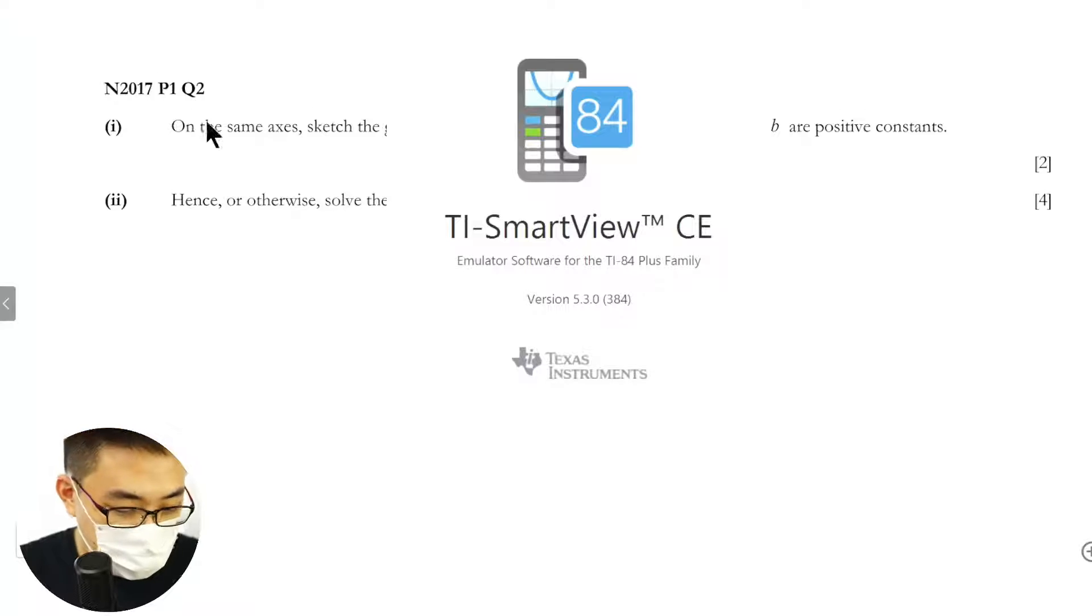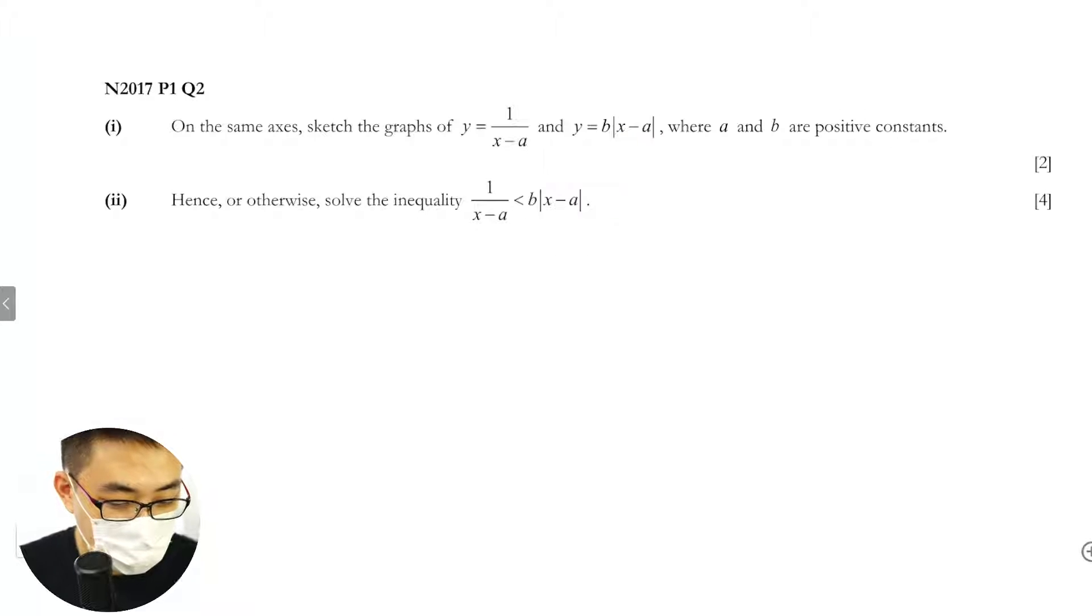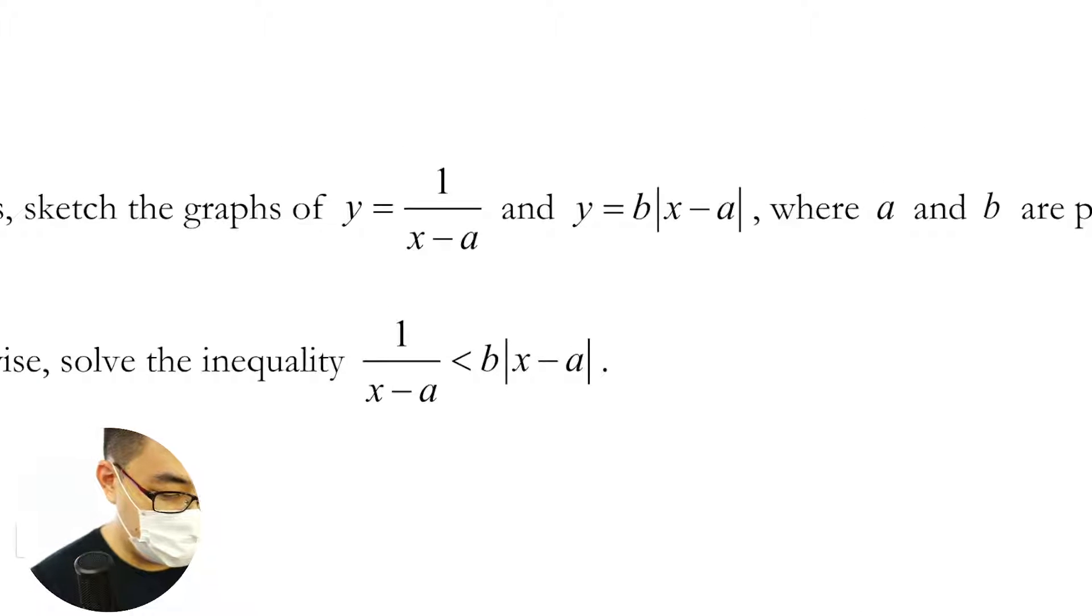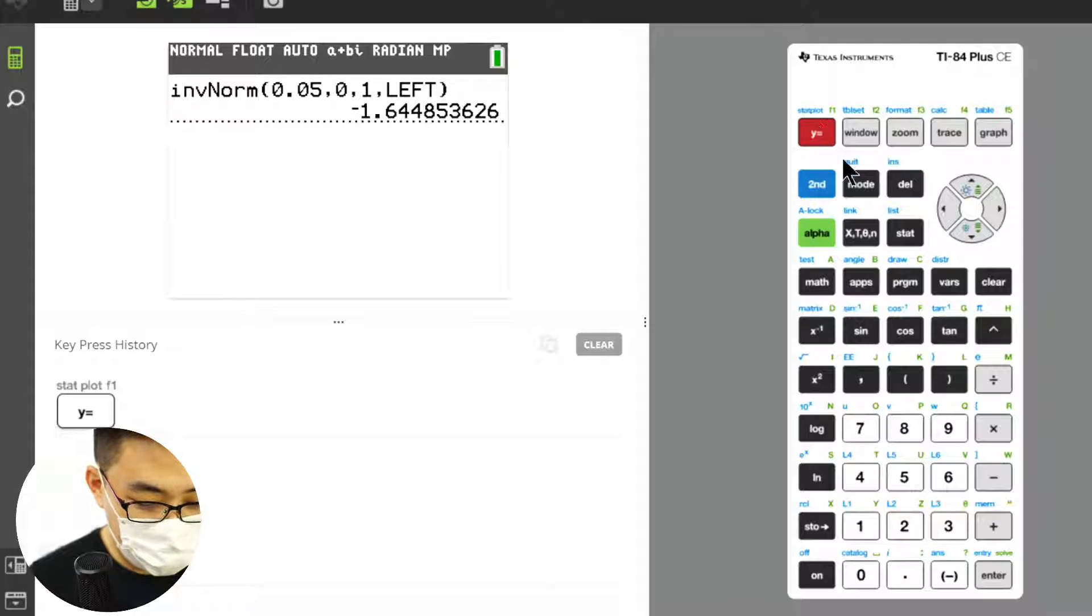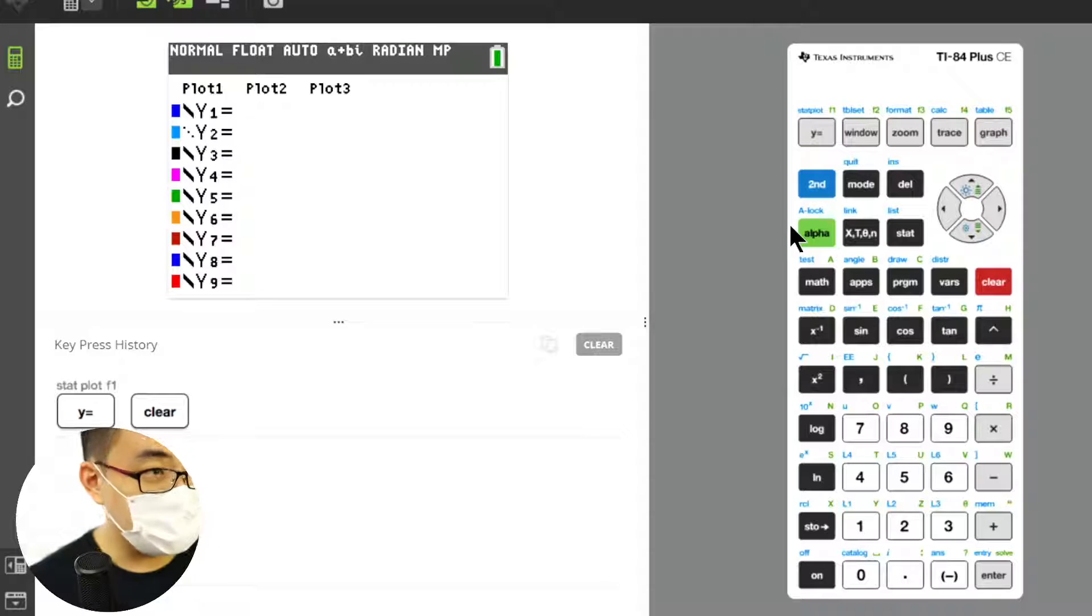Just use your calculator here. Make sure you know that you have a vertical asymptote here, very important. It's like x equals a, this one equals zero, there's a vertical asymptote.